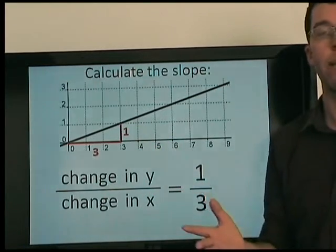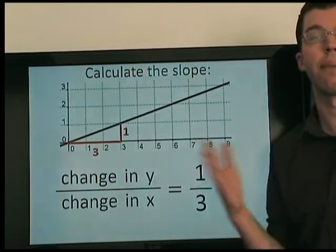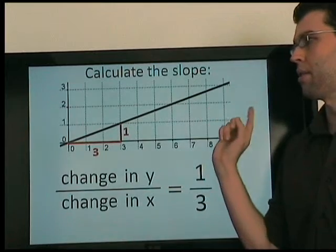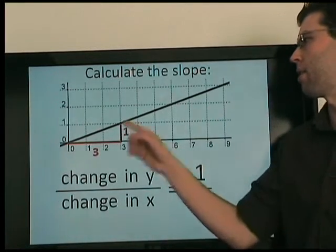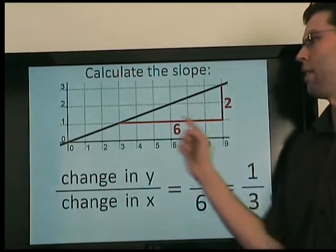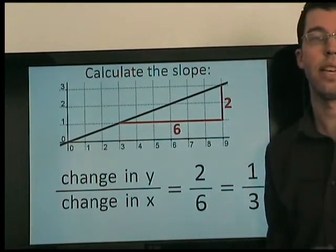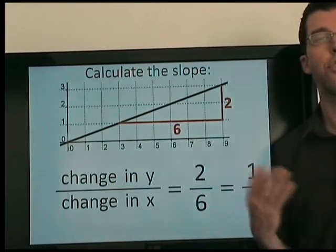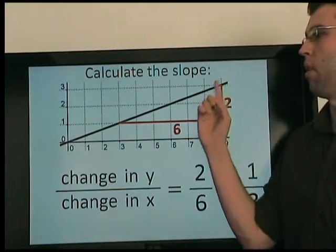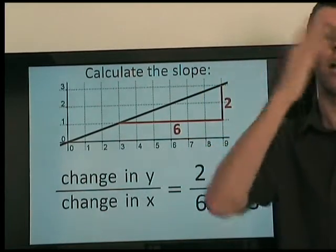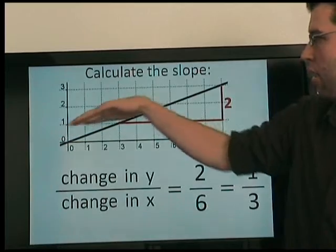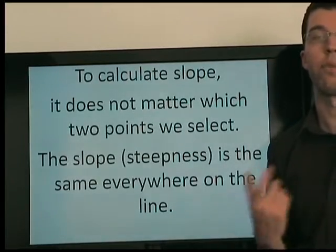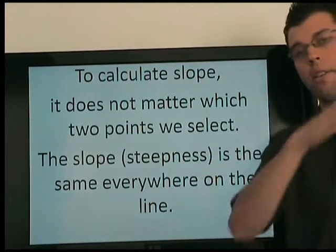You may be thinking, well, what if we pick different points? Would we get the same answer? Well, if you're thinking that, you can answer your own question — just pick any two points and see what you get. So let's do that. Let's pick these two points. Again, this count: 2 and 6, so 2 over 6 is 1 third. We get the same answer no matter what two points we pick. And that should make sense because what are we calculating? Slope — the steepness of the line. Is the steepness here the same as the steepness here? Yes, so it doesn't actually matter which two points we pick. The steepness is the same everywhere on the line.